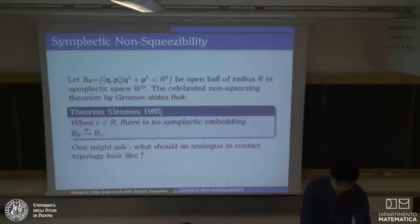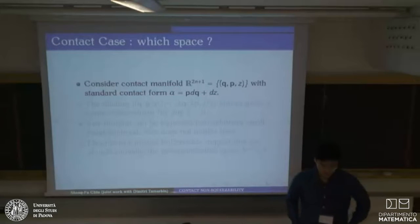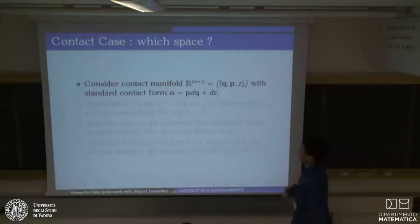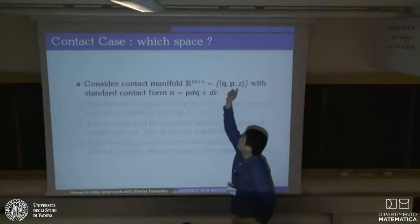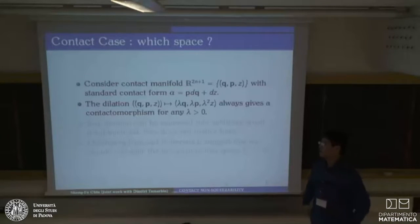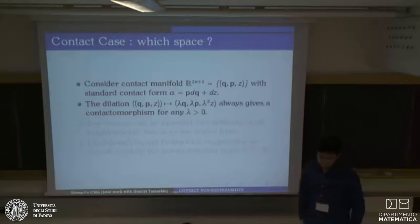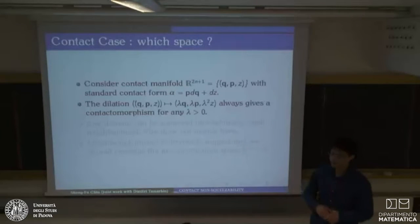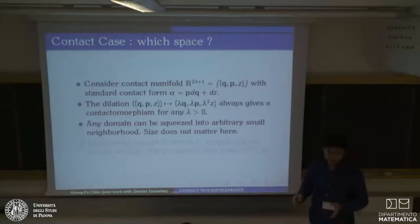The first thing that comes into everyone's mind is odd-dimensional Euclidean space, which is a contact manifold with the standard contact form alpha equal to p dq + dz, where z stands for the last coordinate. But unfortunately, in this case we can dilate the z-coordinate by any positive scalar, and this becomes a contactomorphism, since contactomorphism only cares about the contact structure — the kernel of the contact form — up to a positive scalar. So any domain can be squeezed into arbitrarily small neighborhoods. Size doesn't matter here.